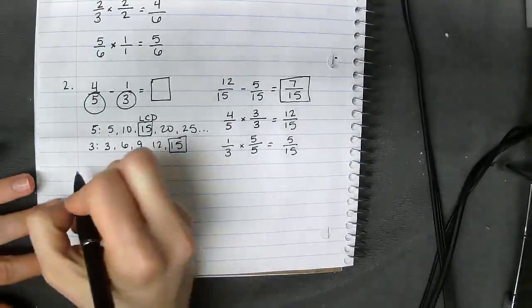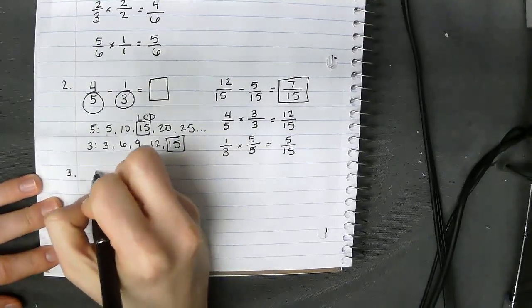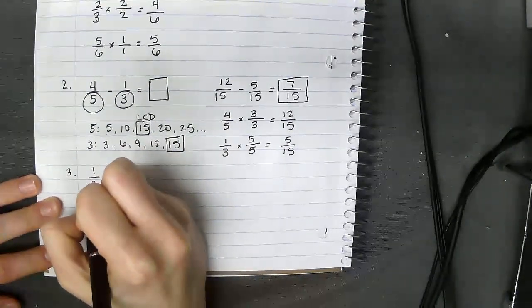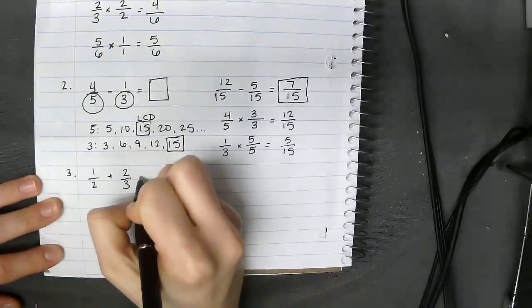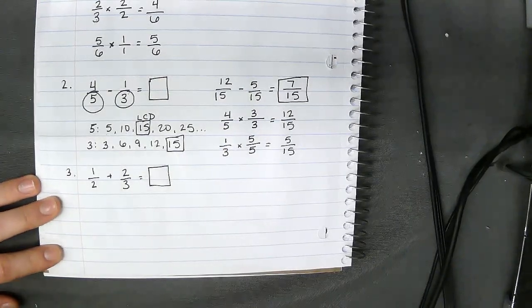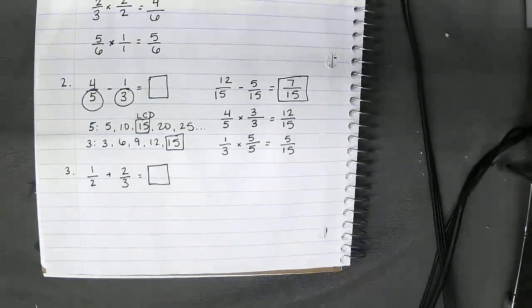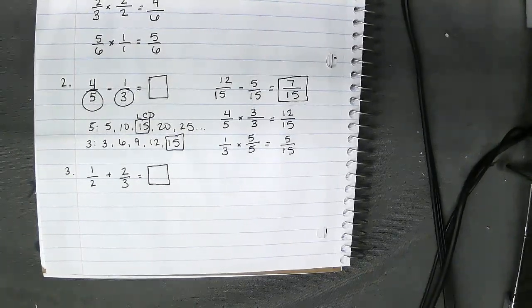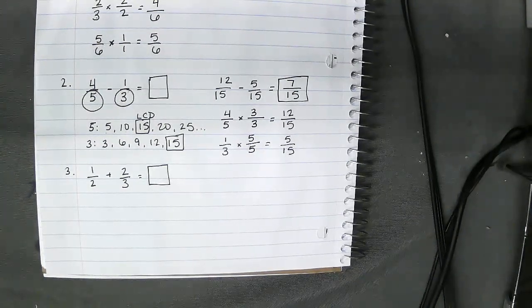Continuing on to number three: we're going to do one half plus two thirds. I want you guys to try and solve this one on your own. So pause the video and solve it, then come back and we're going to solve this one together to check your work. Solve it on your own first — go ahead and pause, then come back.